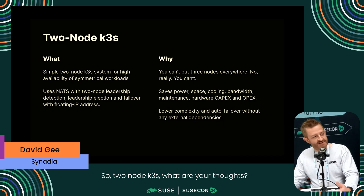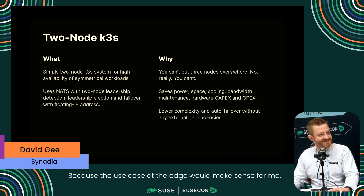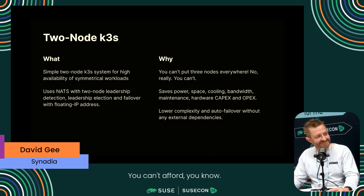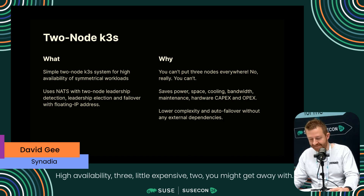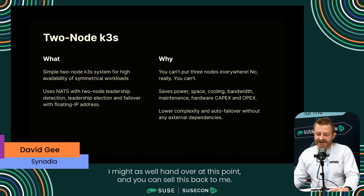So two-node K3S - what are your thoughts? The use case at the edge would make sense because at the edge you can't afford high availability with three nodes - it's a little expensive. Two, you might get away with. So this is absolutely all edge-based. If we take say three servers at $10,000 each versus a thousand nodes at $30 each, we change the paradigm of what edge is.